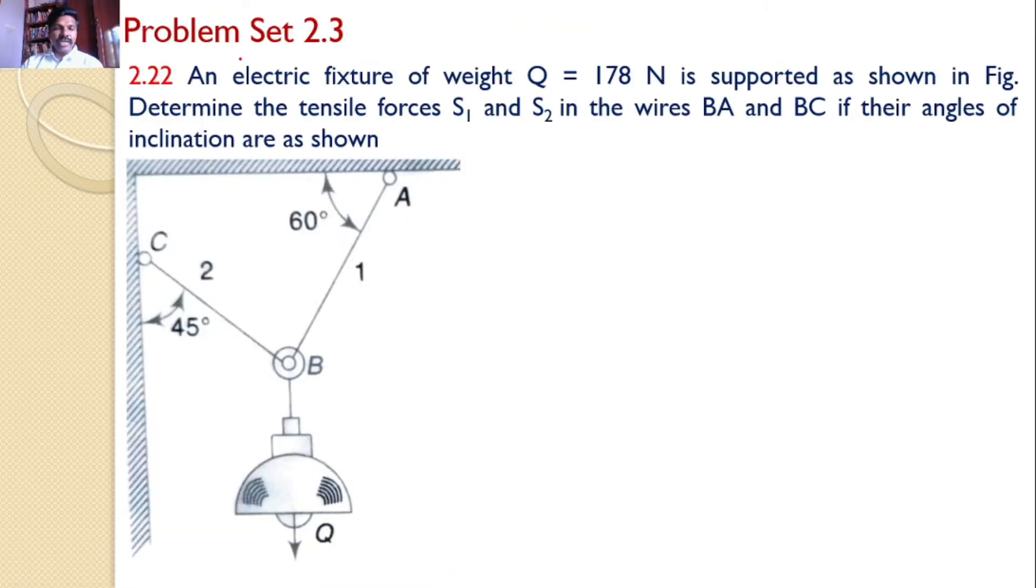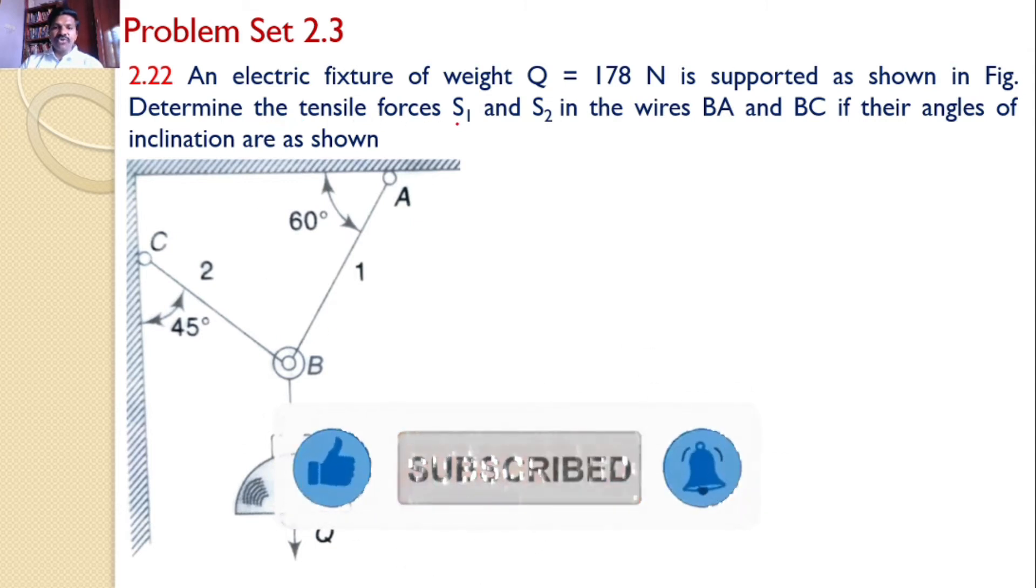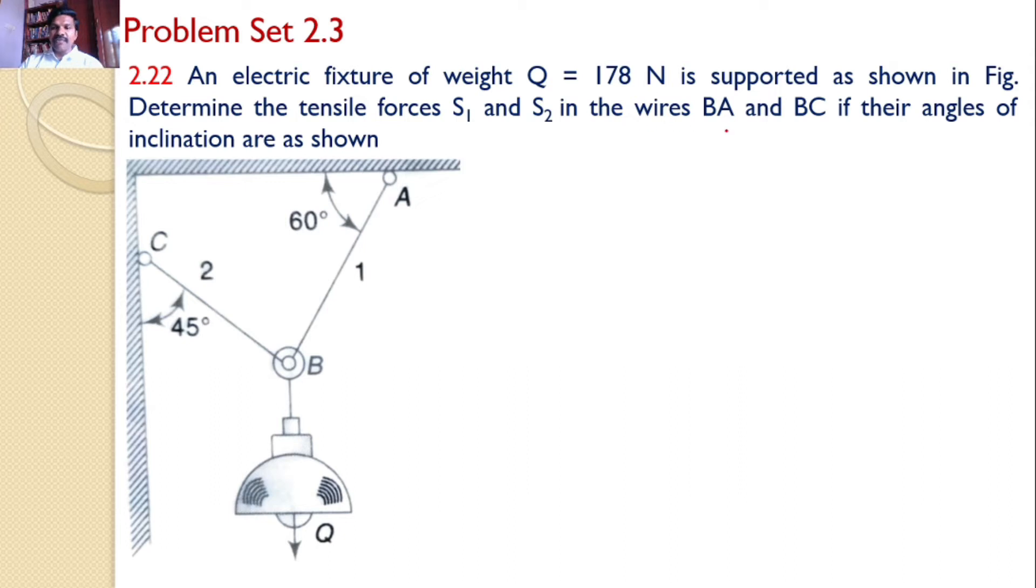In this tutorial, we will discuss problem set 2.3, problem number 2.22. An electric fixture of weight Q equals 178 Newtons is supported as shown in the figure. Determine the tensile forces S1 and S2 in the wires BA and BC if their angles of inclinations are as shown.